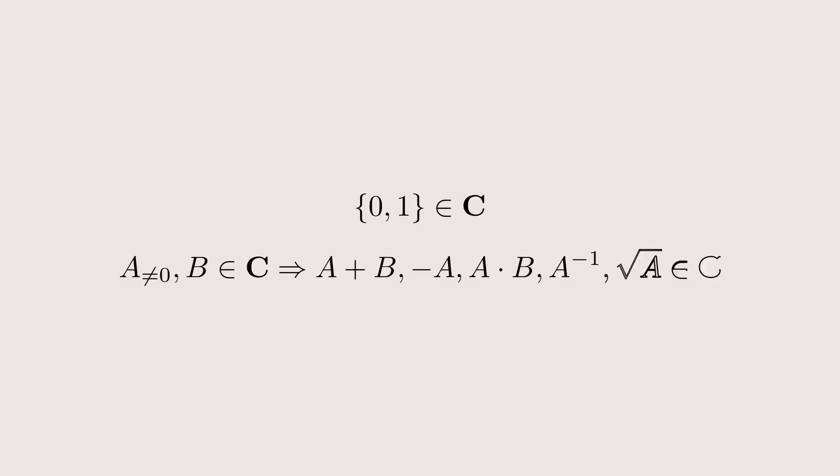And you can write every point as a complex number, with a real part parallel to the real axis and an imaginary part perpendicular to it. Therefore, the complex numbers you can construct are those, for which the real part and the imaginary part can be written using only addition, subtraction, multiplication, division and the square root.